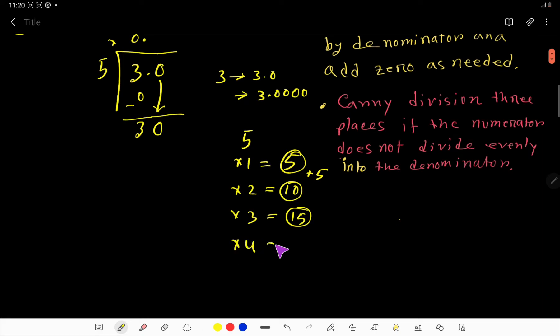Then 20, 25, 30. So 5 times 6 gives us 30. Just add 5 with every step to get the multiplication table.